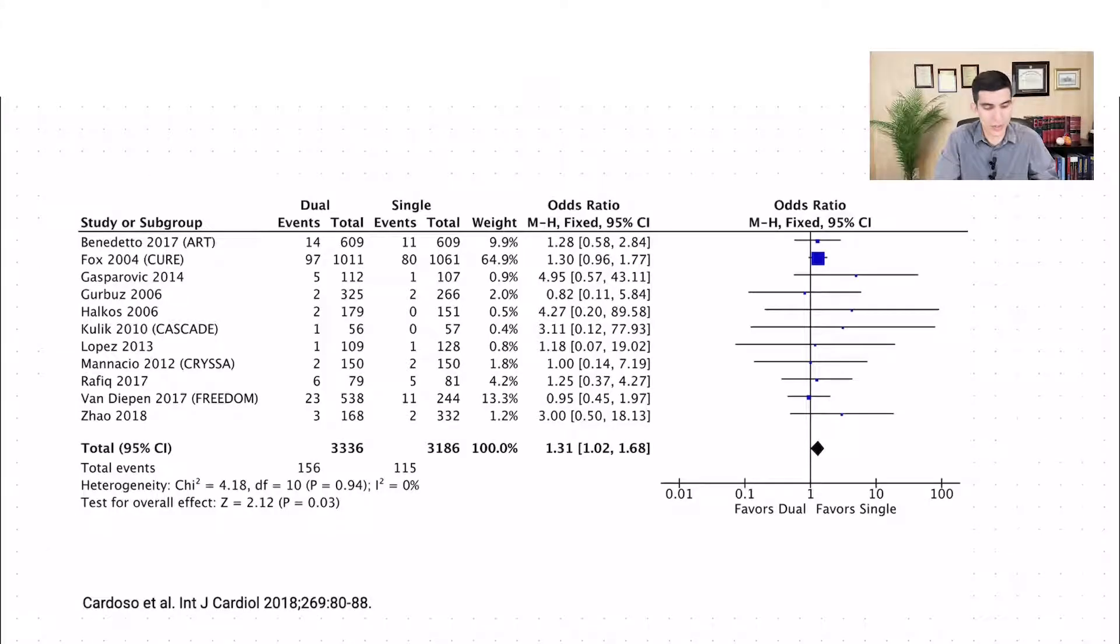In the forest plot, we have this column here on the left that has individual studies included in the meta-analysis. So in this case, each of these studies, each of these authors, represent one different publication. These were studies published at different times, at different locations, all over the world.